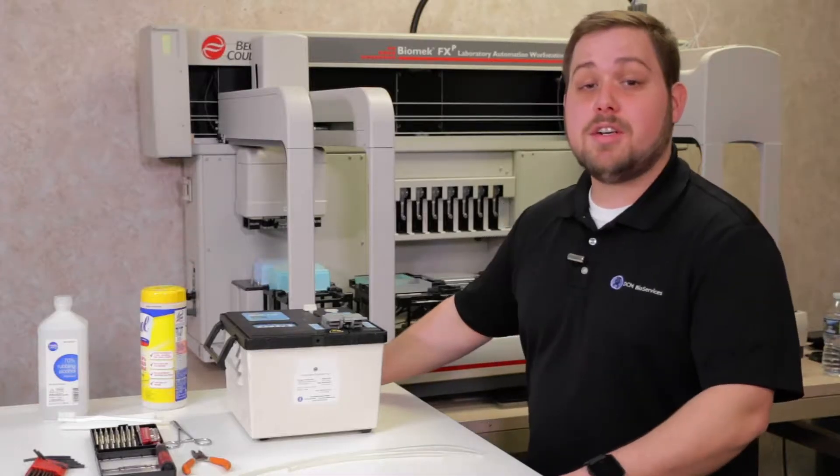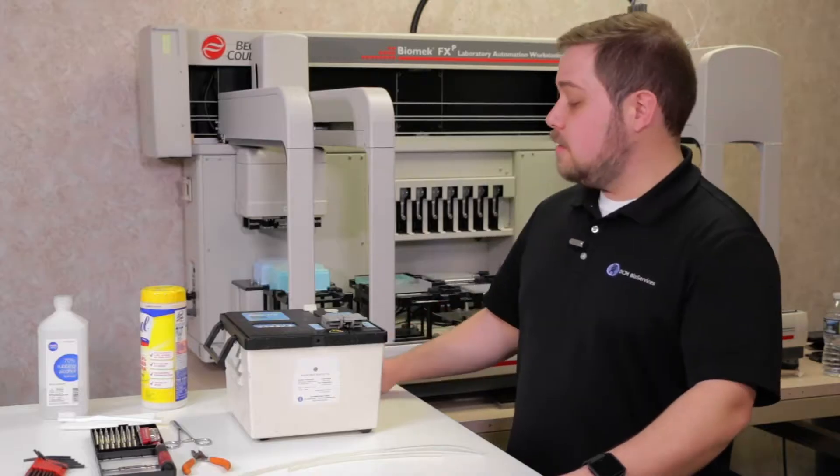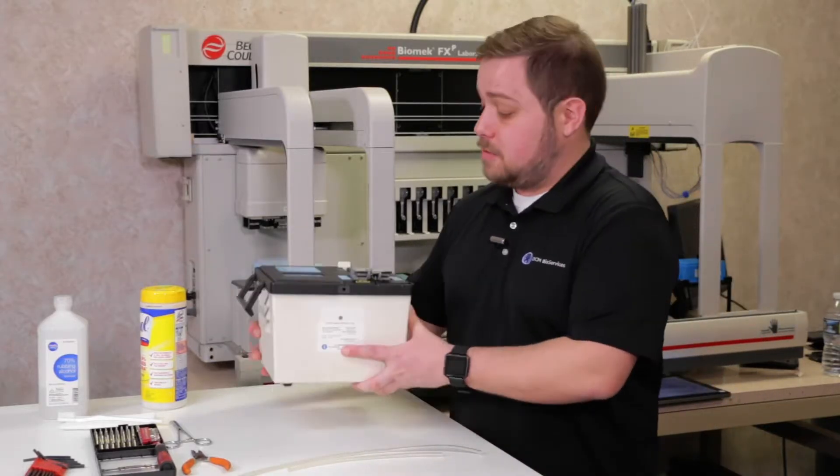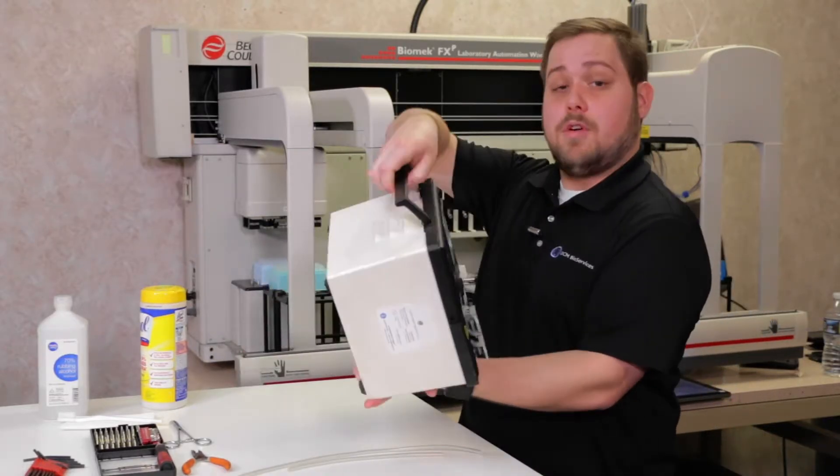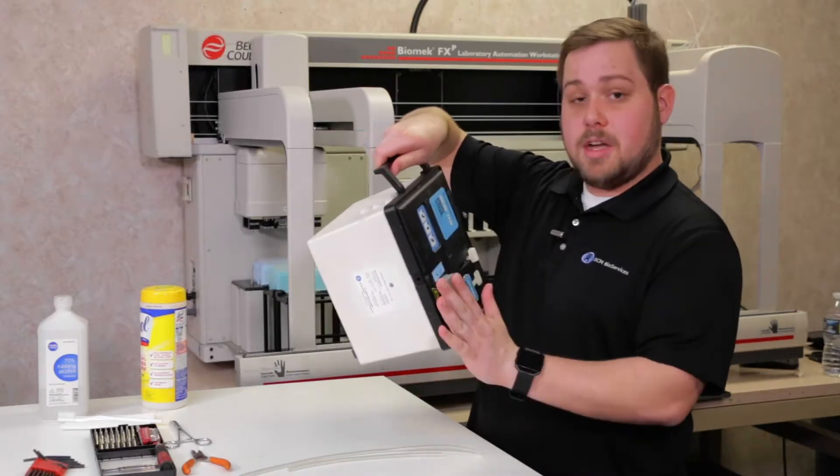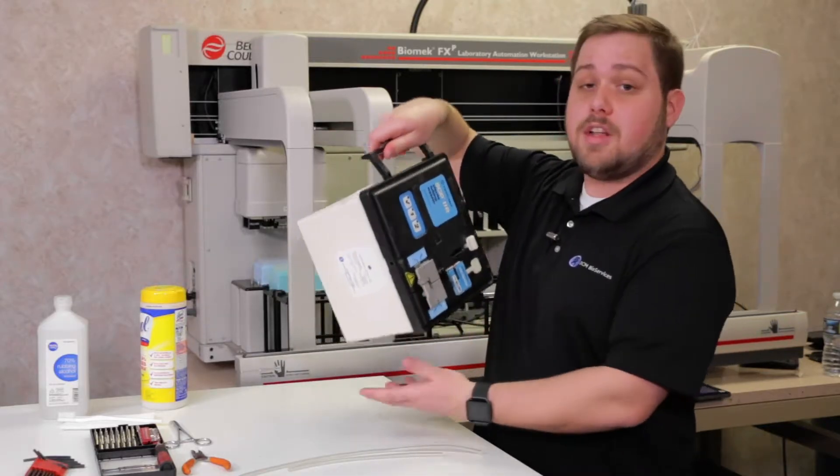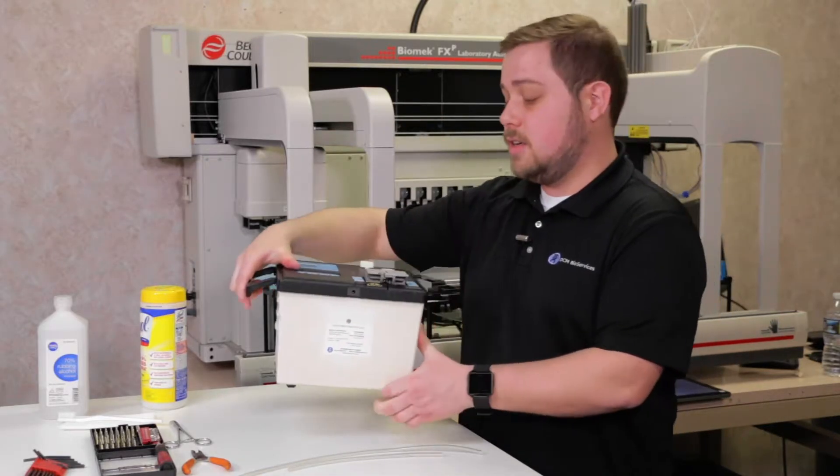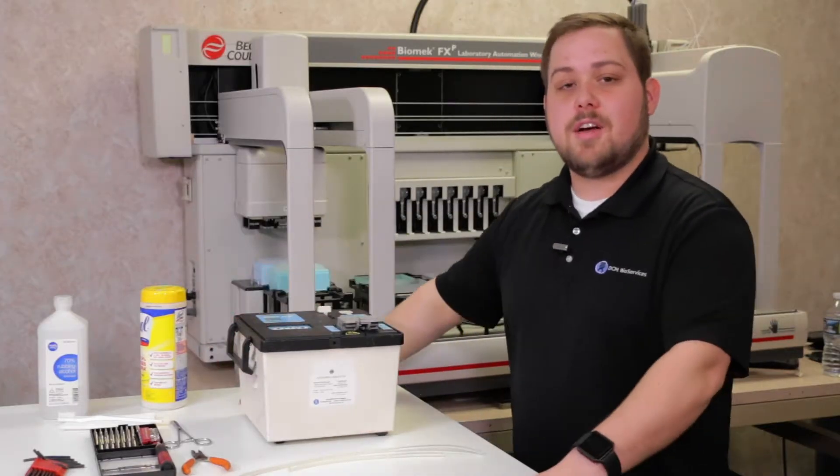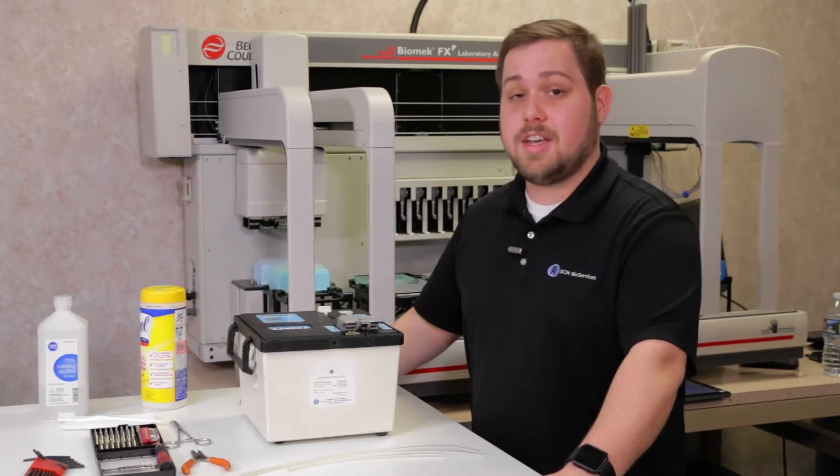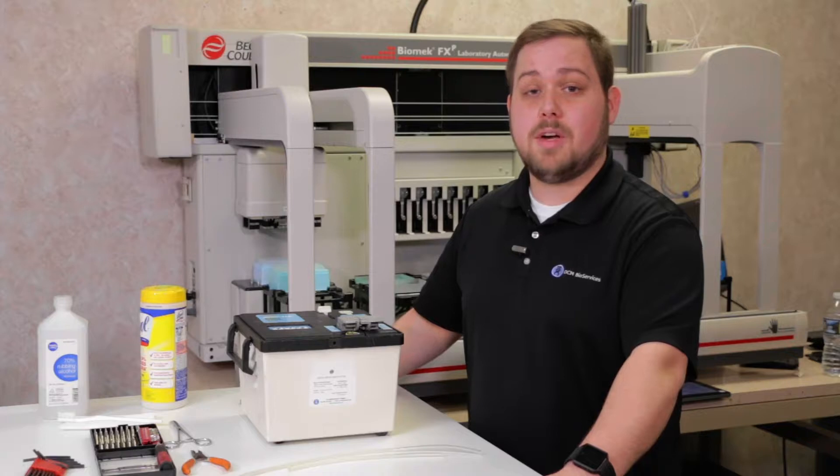When transporting your tube welder to storage or another lab, first unplug it and make sure to carry it either from the base or from the carry handle. Make sure that the tube carriers do not contact anything else, as you can knock the alignment out. Never store it on its side, upside down, or stacked, as this will cause misalignment problems with your welder.